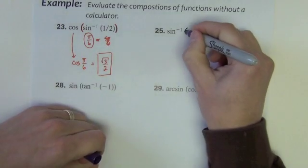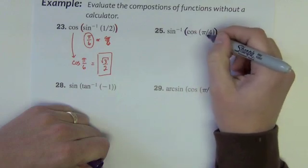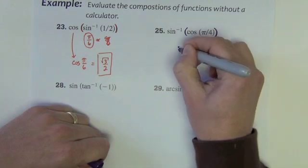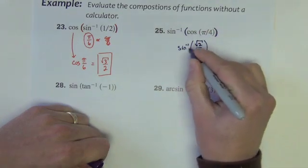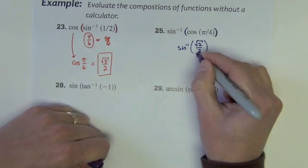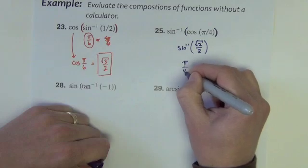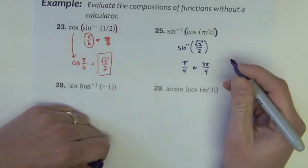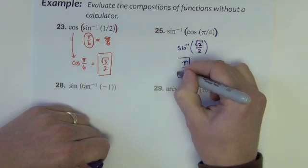Next one. Starting inside the parentheses: cosine of pi over 4. It's not an inverse function, so I just want the cosine of pi over 4 — the x value at pi over 4 — which is square root of 2 over 2. Now I want sine inverse of square root of 2 over 2, so where on the circle do we have y values of square root of 2 over 2? It happens at pi over 4 or 3 pi over 4. I want the one on the right side for sine inverse, so I throw away 3 pi over 4 and pick pi over 4.